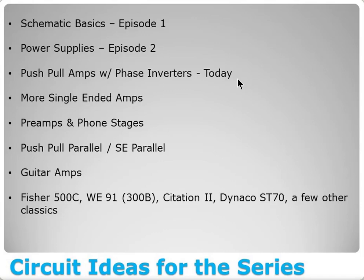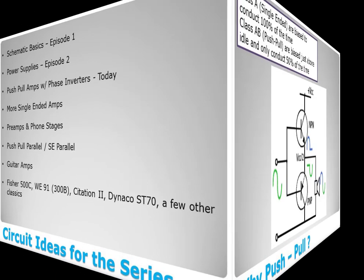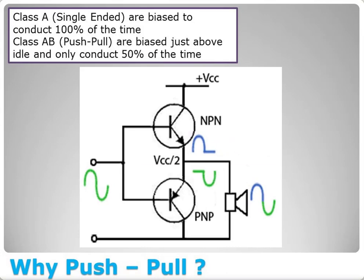You may ask: what is a push-pull amplifier? This picture here is a transistor amplifier, but it does a great job of showing what push-pull looks like. The basic design is: your signal flows into the amplifier, one output device amplifies half of the signal, the other device amplifies the other half, and those two get added back together as an amplified version of the input.